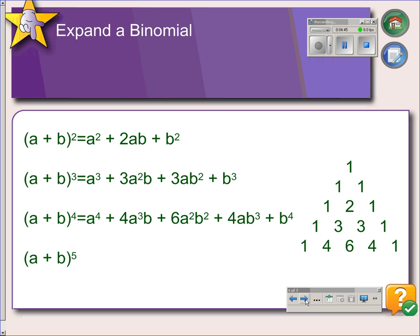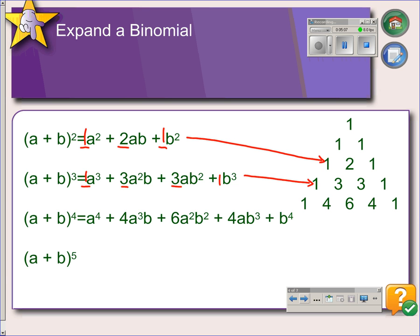Hopefully, you have figured out the pattern. And what you should notice is the coefficients here in the expanded binomial match up with the row in the table. So the coefficients on the cubic term are 1, 3, 3, 1, which goes along with this row.